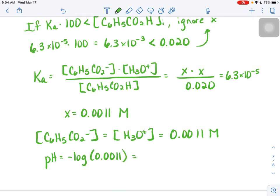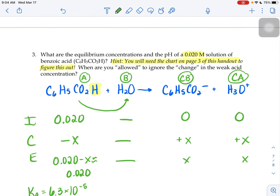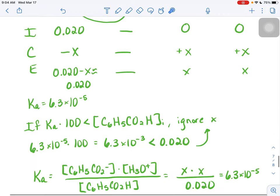So we were able to determine our equilibrium concentrations, our values of x, the pH, and we figured out how you can, when you're allowed to ignore that x in an equilibrium ICE table.